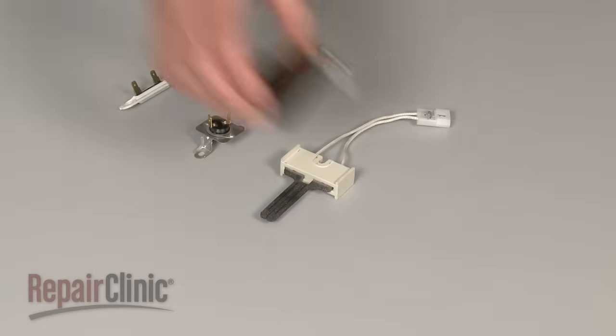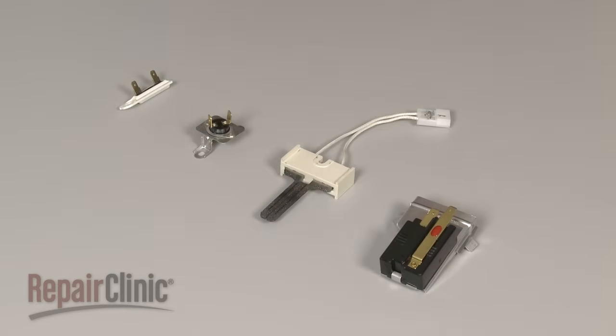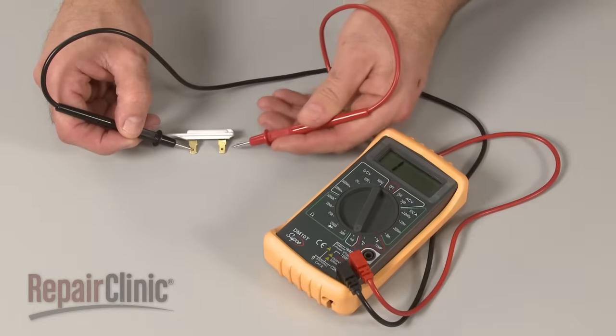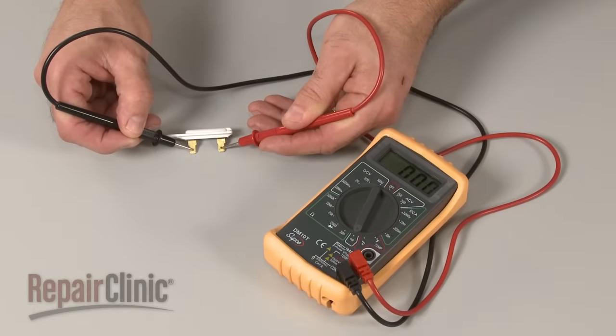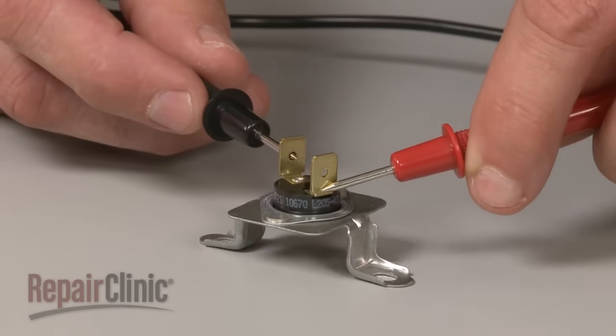In addition to the fuse and high-limit thermostat, the igniter and flame sensor can also fail and prevent the dryer from heating. If your dryer does not heat, you should test all of these parts individually to determine if one of them has stopped functioning.